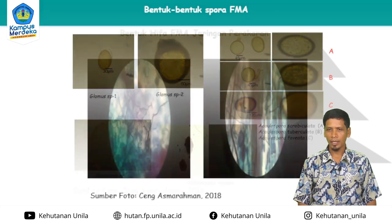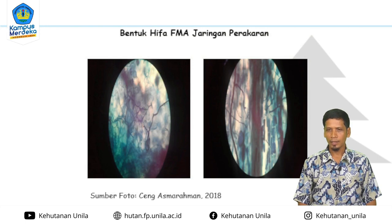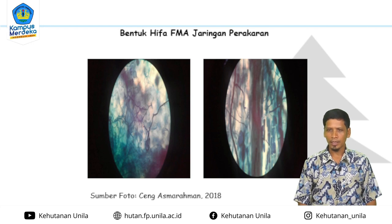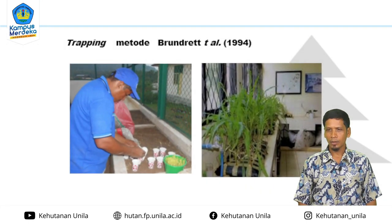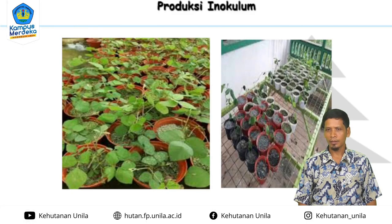Ini bentuk hifa FMA. Kalau kita lihat pada jaringan tanaman ketika diinokulasiakan, akan terlihat hifa-hifa FMA yang masuk ke bagian jaringan dalam tanaman atau bagian korteks. Juga bisa kita lihat vesikelnya, yang berperan sebagai tempat cadangan makanan bagi FMA atau endomikoriza. Di percabangan ini adalah arbuskular, tempat pertukaran energi antara tanaman inang dengan mikoriza. Ini trapping mikoriza menggunakan tanaman Centrosema, dan untuk perbanyakan di rumah kaca menggunakan tanaman Pueraria japonica untuk produksi inokulan sebelum diinokulasiakan ke tanaman kehutanan.